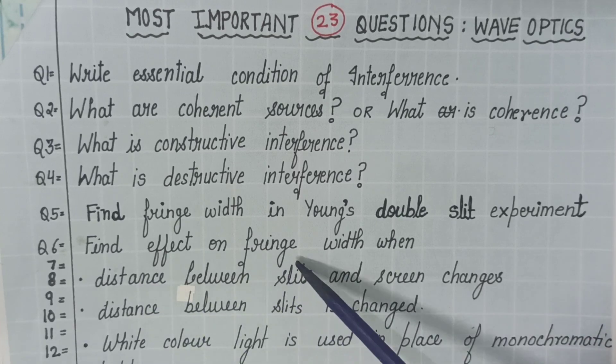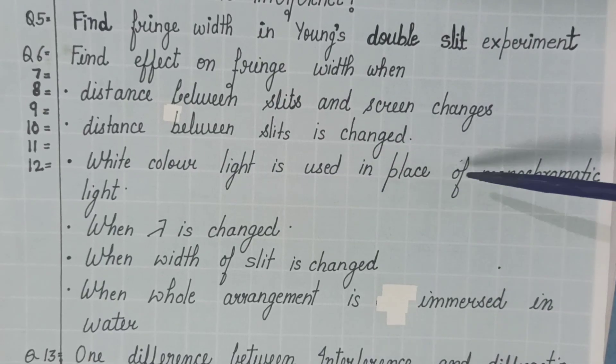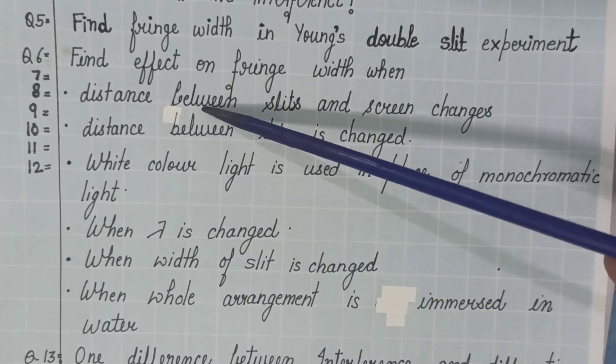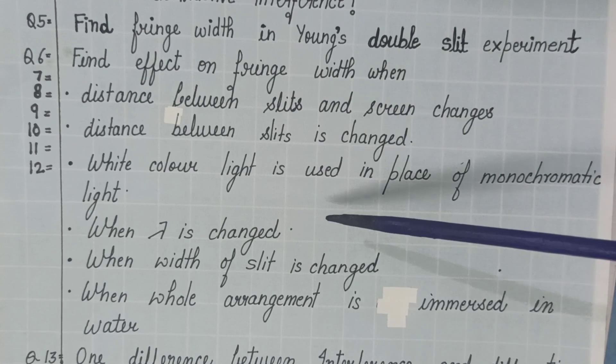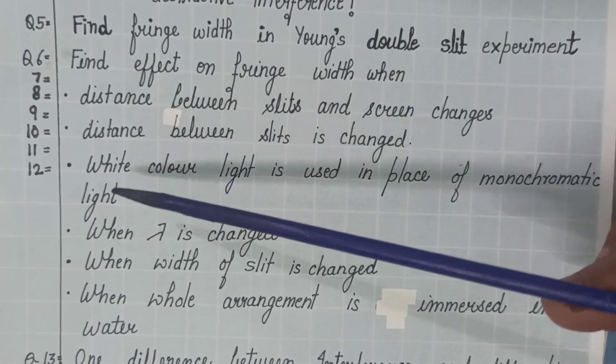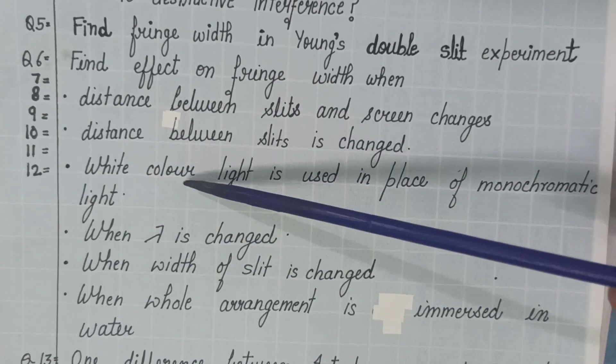Then, find effect on fringe width when white color light is used in place of monochromatic light in Young's double slit experiment. Distance between slits and screen is changed. Distance between slits is changed. Then, lambda that is the color of the light is changed. Not white light. White light is having seven colors.